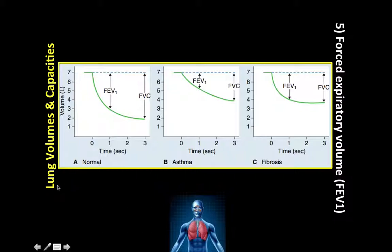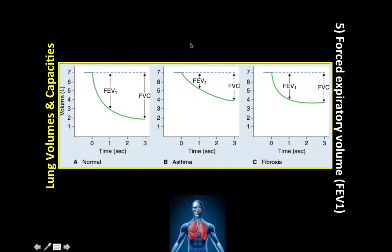Now for the last topic: forced expiratory volume, or FEV1. FEV1 is the volume of air that can be expired in the first second of forced maximal expiration. Normally, FEV1 is about 80% of forced vital capacity (FVC), expressed as FEV1/FVC = 0.8.